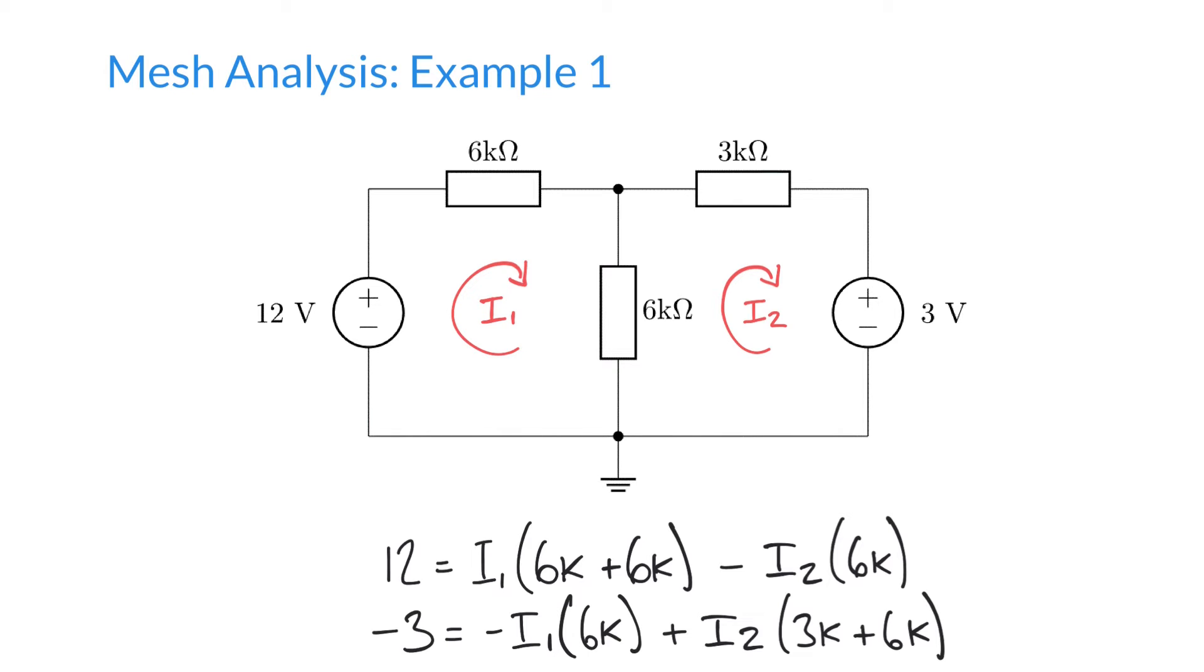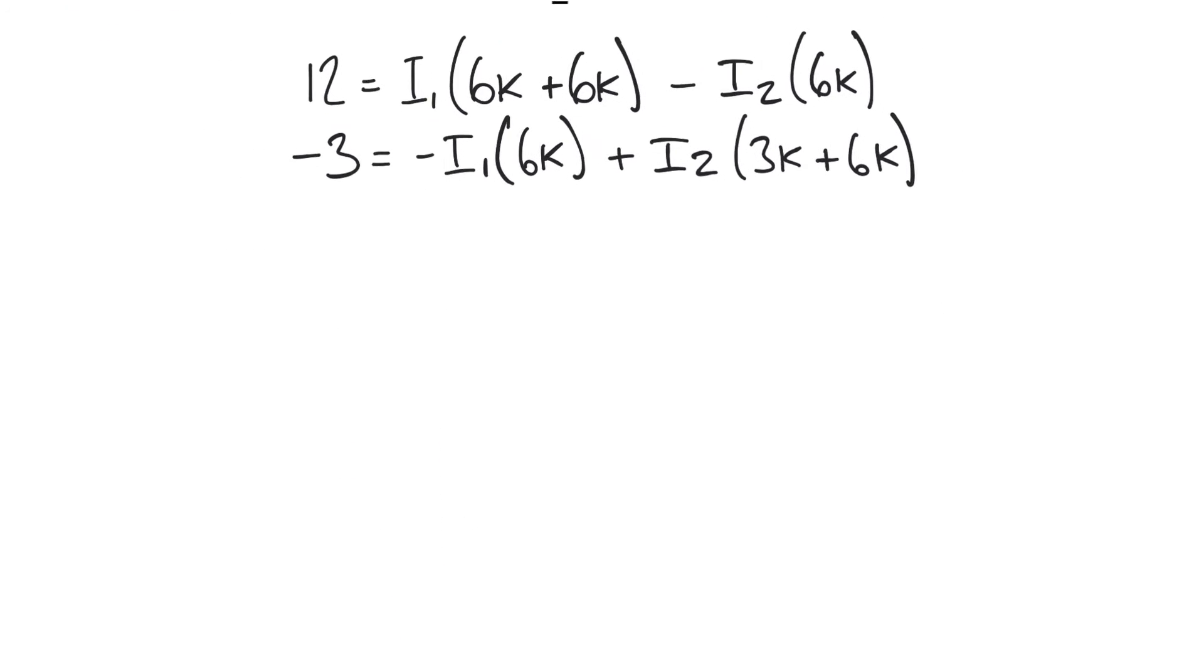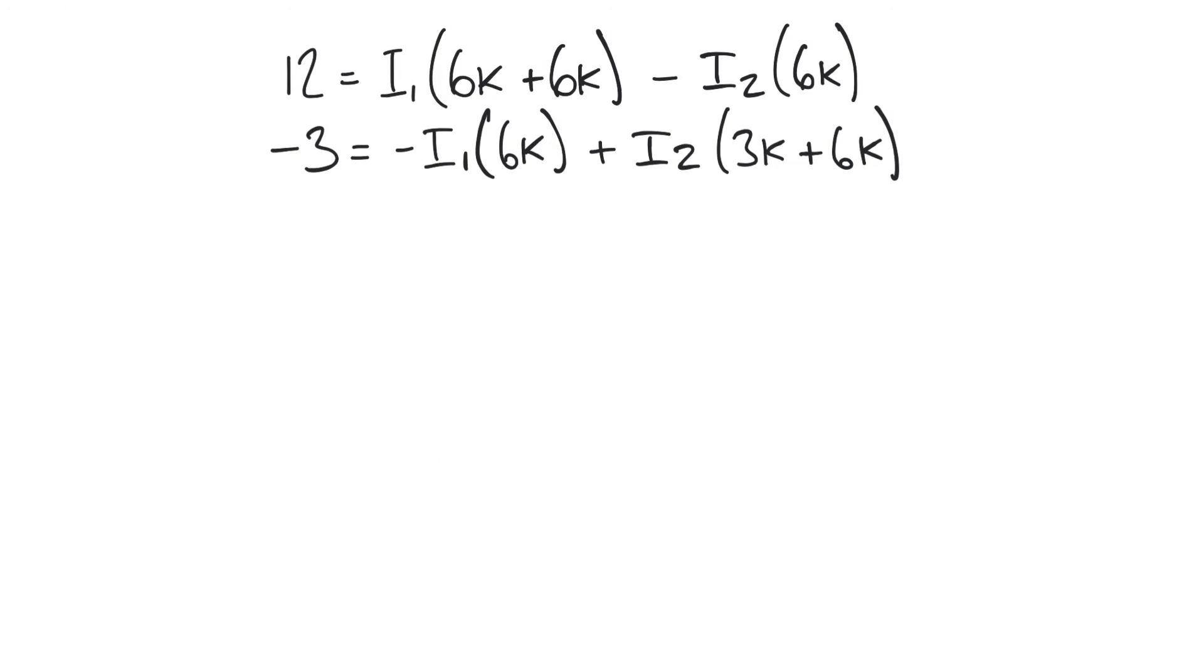And so we have our two equations there. You'll notice that I've rearranged these terms so that they're always in order: I1, I2, I1, I2. And that becomes more important in more complicated examples later on when we're using matrices. We'll see some examples where we use matrices to solve systems of equations. It doesn't matter so much now, but it's worth getting into the habit of reordering those terms in order.